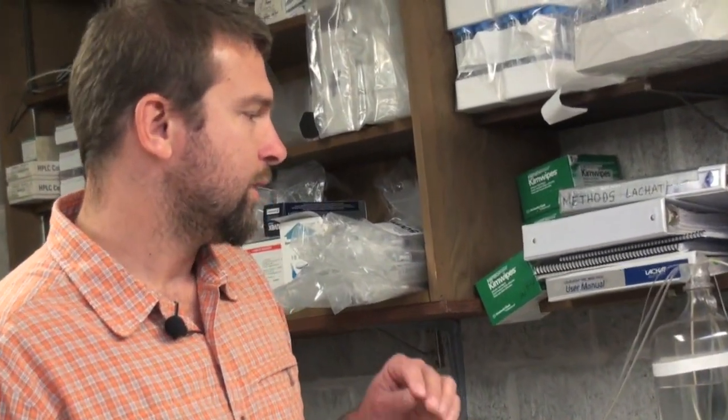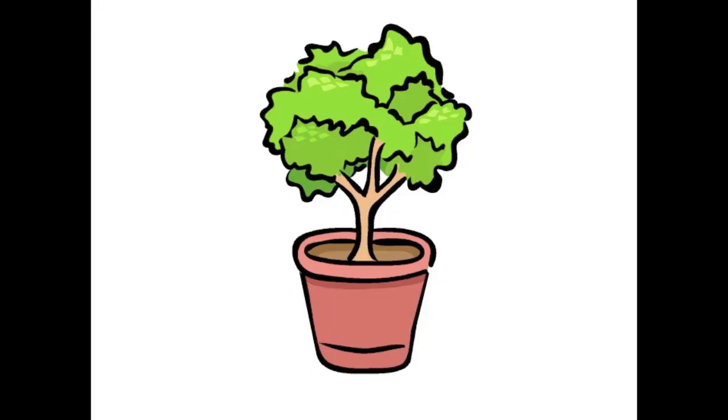In the case of nitrate and phosphate, they are the same types of macronutrients that you would have in fertilizer that you put in a potted plant in your home.